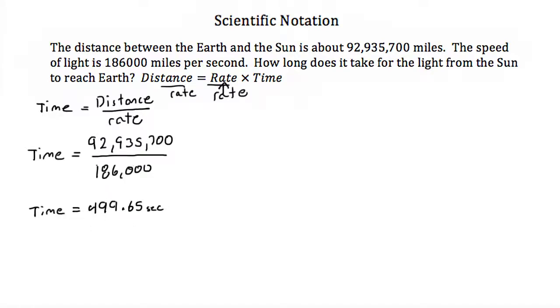Okay that's no problem. But what if we had taken 92,935,700 and put it in scientific notation? Well we would rewrite this as 9.29 to the 1, 2, 3, 4, 5, 6, 7th. So times 10 to the 7th power.